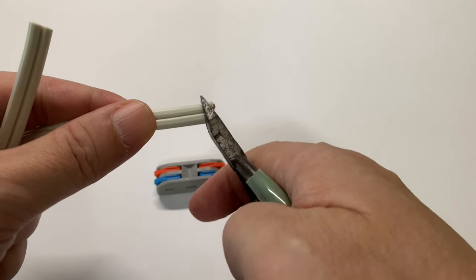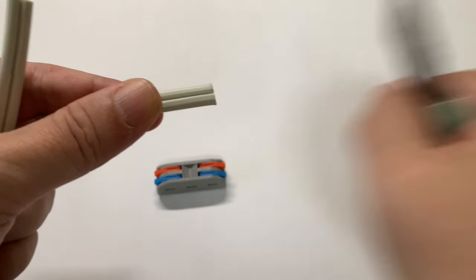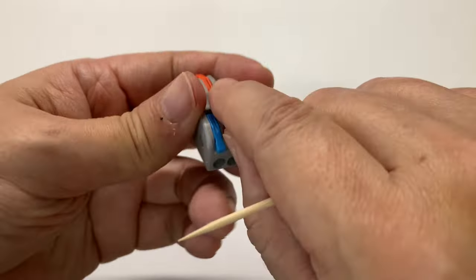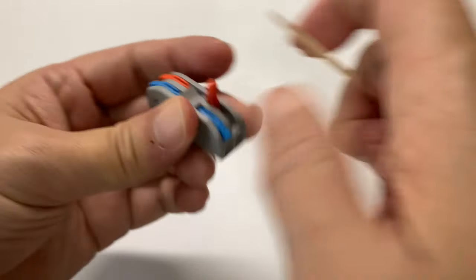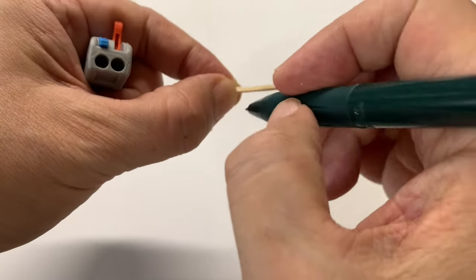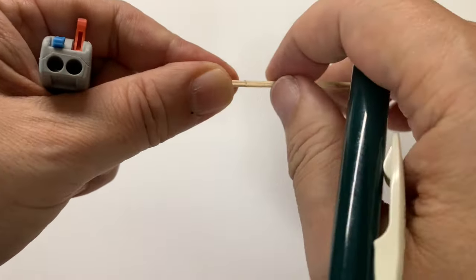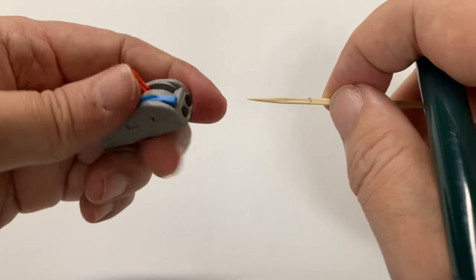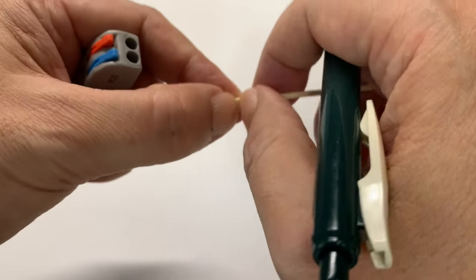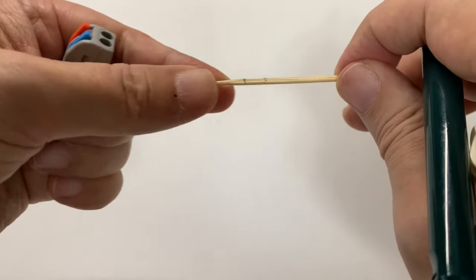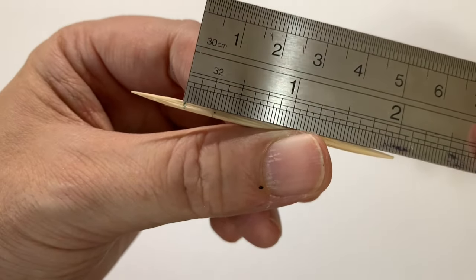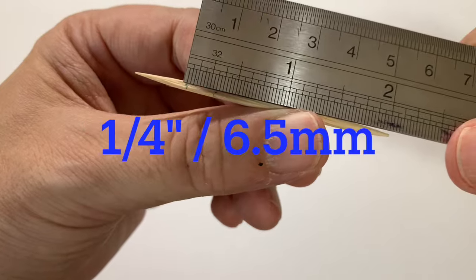Let's prepare the wires to be spliced. First, make sure the tip of the pair of wires are cut flush to each other. Then let's determine the depth, both when the lever is open and closed. The measured depth of the clip is around one quarter of an inch, or six and a half millimeters.